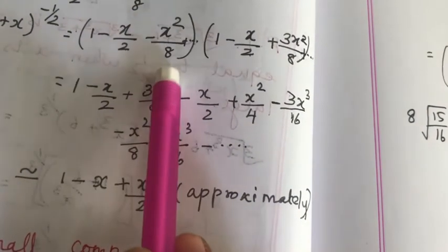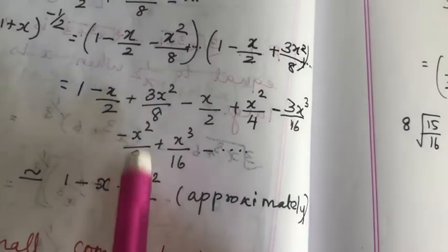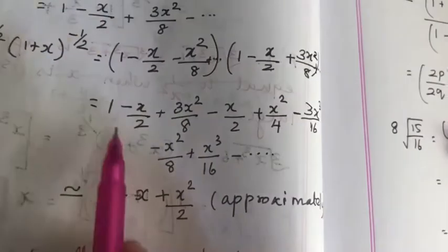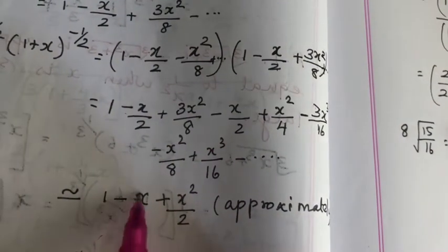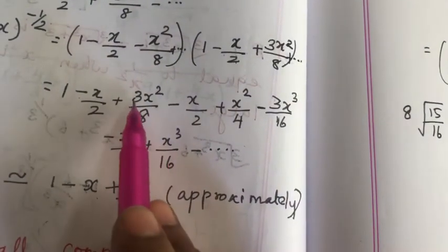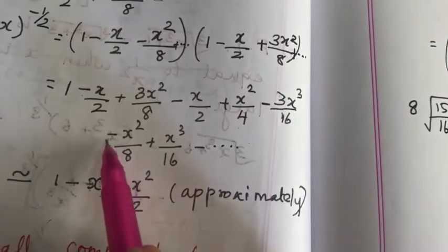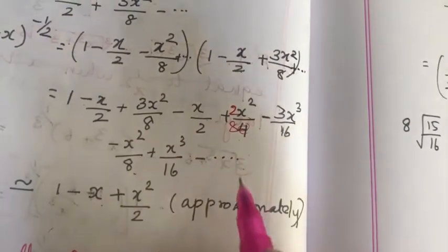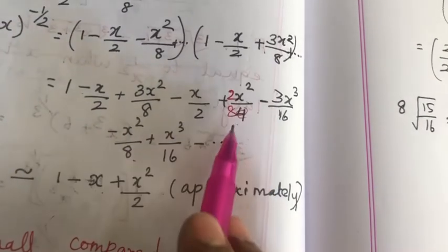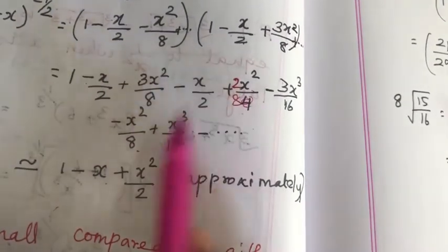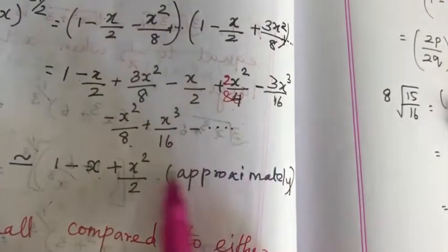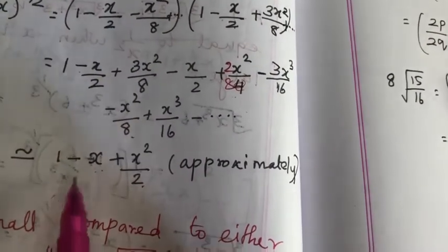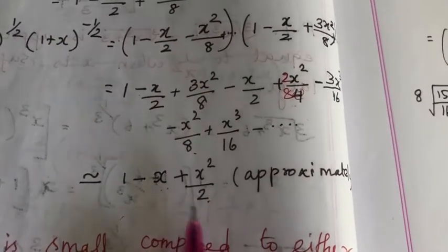Now multiply with −x²/8: (−x²/8)·1 = −x²/8. Combining: −x/2 − x/2 = −x. For x² terms: 3x²/8 + x²/4 − x²/8. Writing x²/4 as 2x²/8: 3x²/8 + 2x²/8 − x²/8 = 4x²/8 = x²/2. So the expression simplifies to approximately 1 − x + x²/2, which is the given condition — this is approximately equal, not exactly equal.